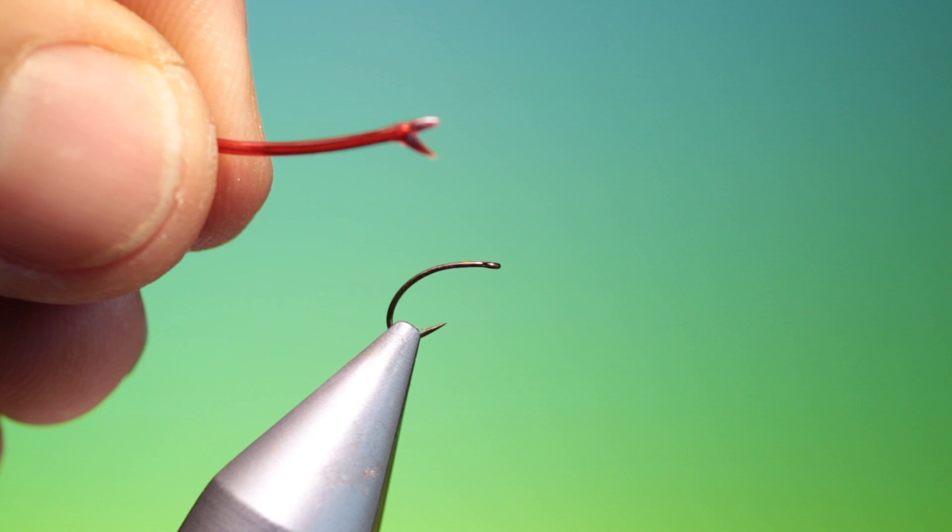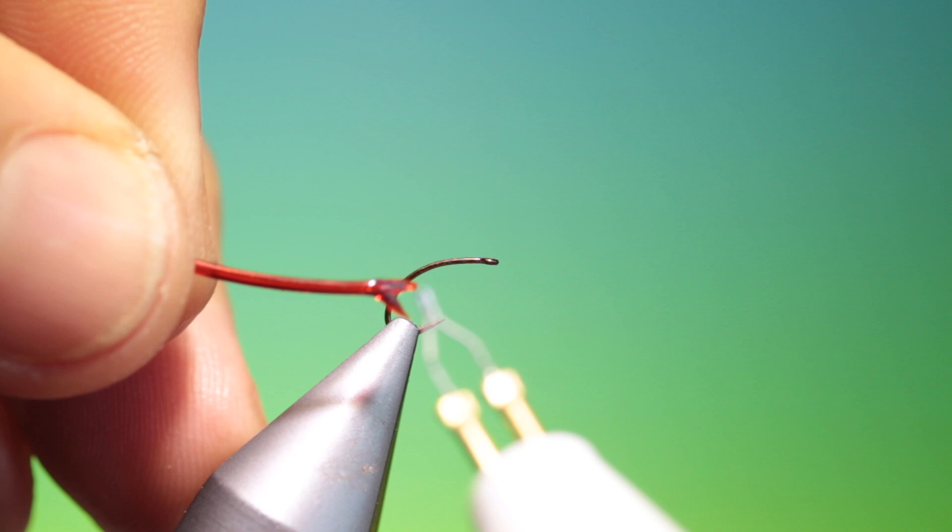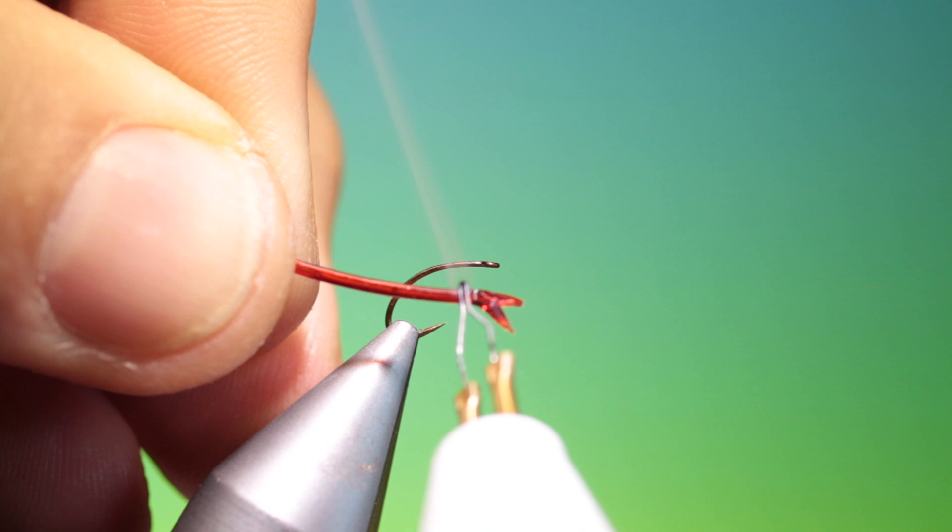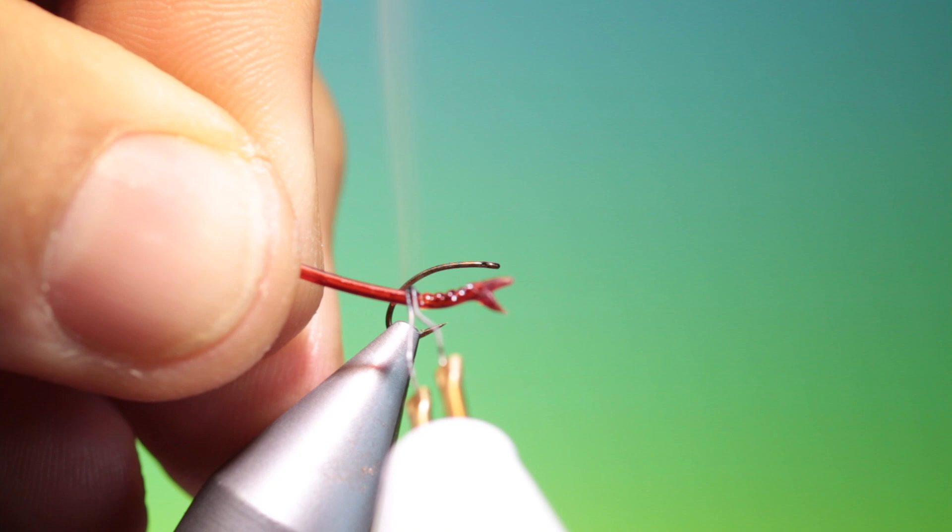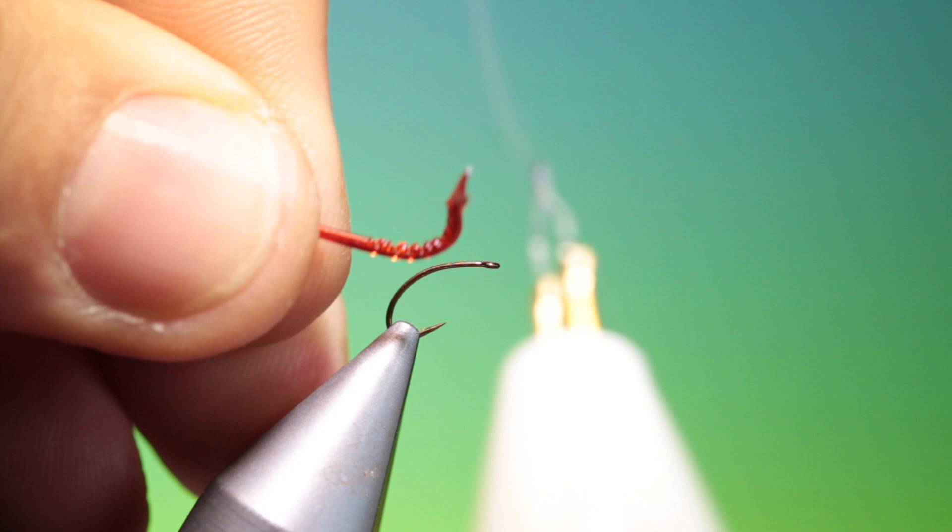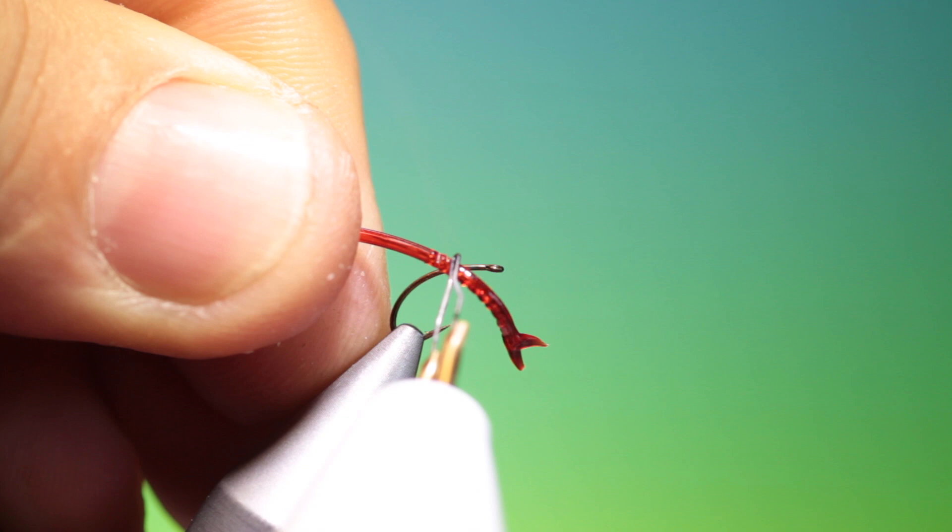Then what we do is we take a cautery tool and we mark the segmenting along the blood worm, turn it over and we do the same on the other side.